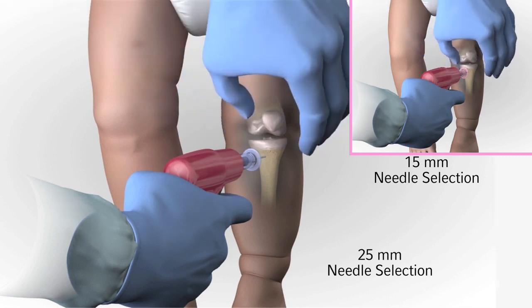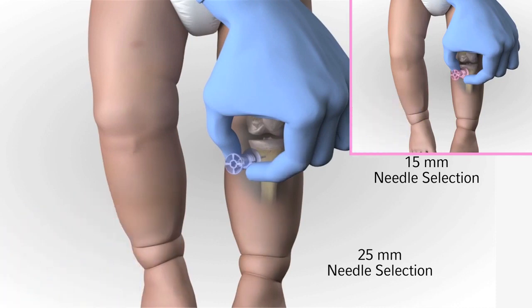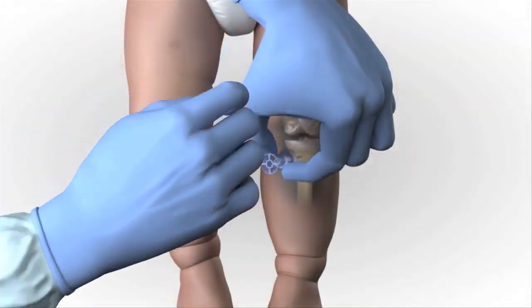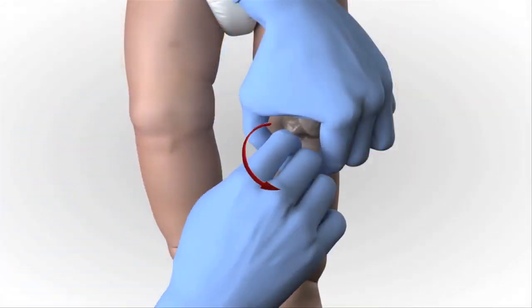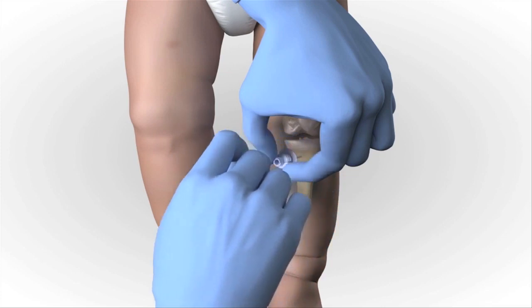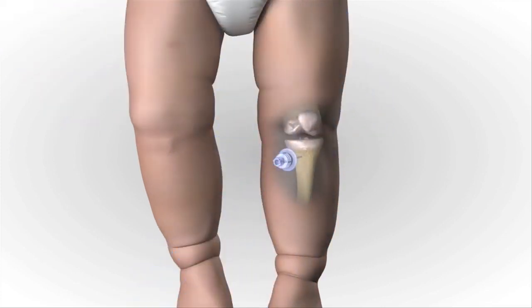Hold the hub in place and pull the driver straight off. Continue to hold the hub while twisting the stylet off the hub with counter-clockwise rotations. The catheter should feel firmly seated in the bone. Place the stylet in a sharps container.